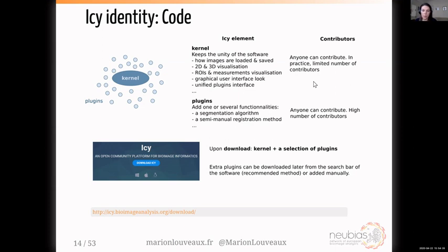Plugins are small modules that connect to the kernel and can add one or several functionalities — for instance, a segmentation algorithm or a registration method. Anyone can contribute, and the number of contributors is quite high because it's easier to connect these modules. When you download ICY from the ICY website, you get a kernel and a selection of plugins, and then you can get extra plugins later or add them manually.